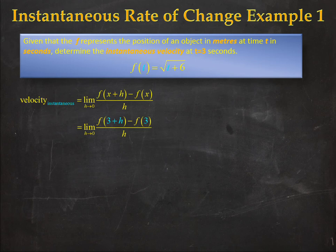So let's substitute 3 plus h into my function and that will give us the limit as h goes to 0 of the square root of (3+h)+6 minus the square root of 3+6 all over h.